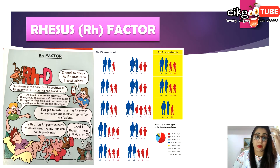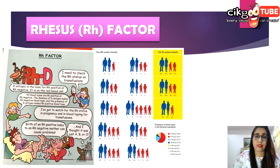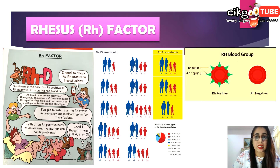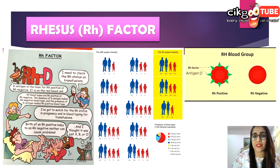The rhesus system is a blood classification system based on the rhesus factor. The rhesus factor is genetically determined and refers to a rhesus protein known as antigen D, found on the cell membranes of the red blood cells. Anti-D antibody causes agglutination and hemolysis of red blood cells of the Rh positive individual. It does not appear automatically in the blood of the Rh negative individual.